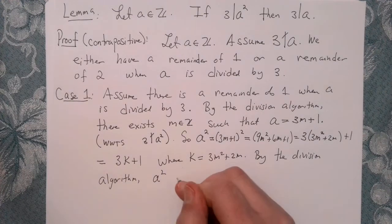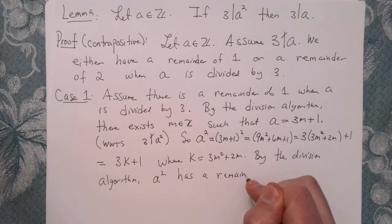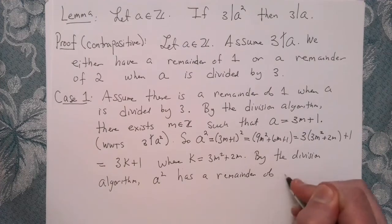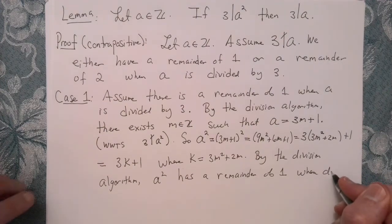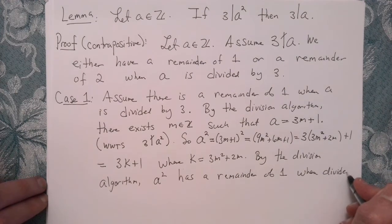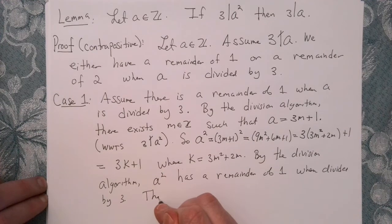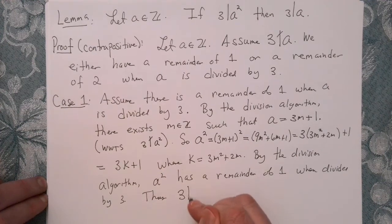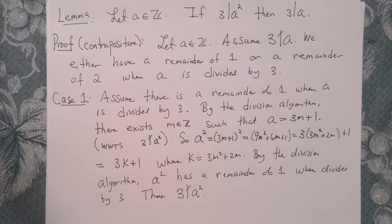So A squared has a remainder of 1 when divided by 3. And thus, 3 does not divide A squared. Okay, so that's case 1.